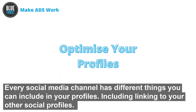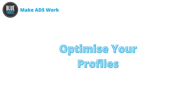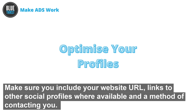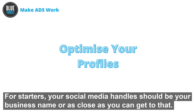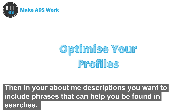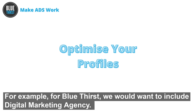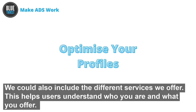Every social media channel has different things you can include in your profiles, including linking to other social profiles. Make sure you include your website URL, links, other social profiles where available, and a method of contacting you. You should also include keywords in your profile. Your social media handles should be your business name, or as close as you can get to that. Then in your about me description, you want to include phrases that can help you be found in search. For example, Blue Thirst would want to include 'digital marketing agency', along with different services we offer.